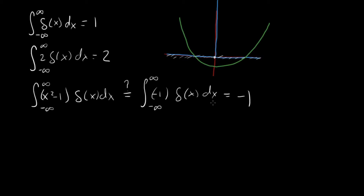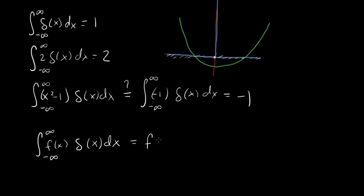This is actually part of a more general property. The general rule is that if you're integrating some function f of x multiplied by a delta function, then this is going to be equal to f evaluated at the value where the delta function peaks — which is 0. I'll circle this because this is an important property.